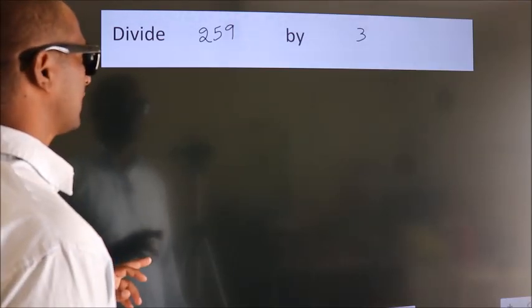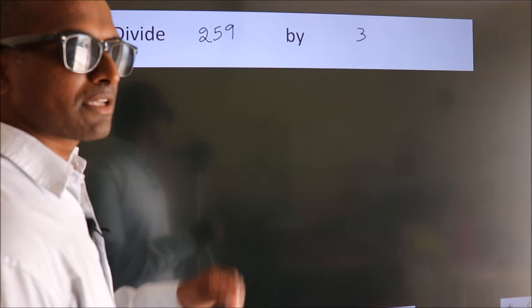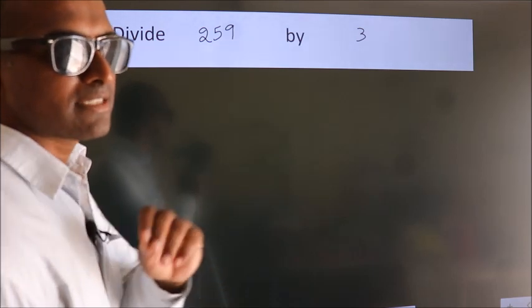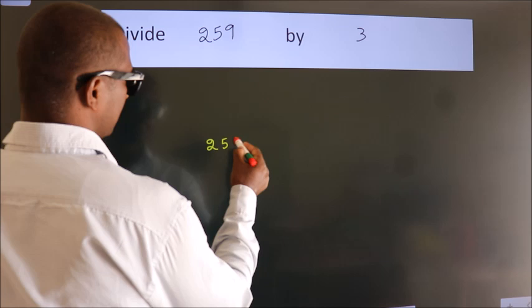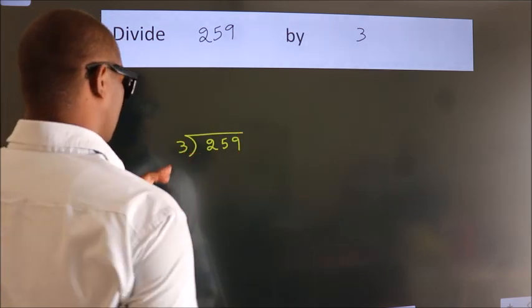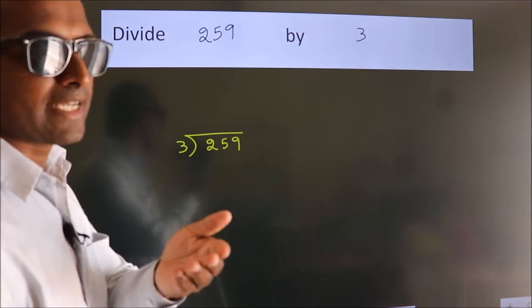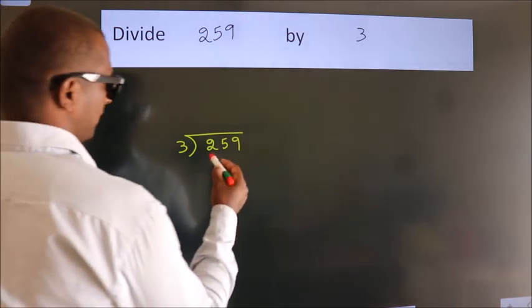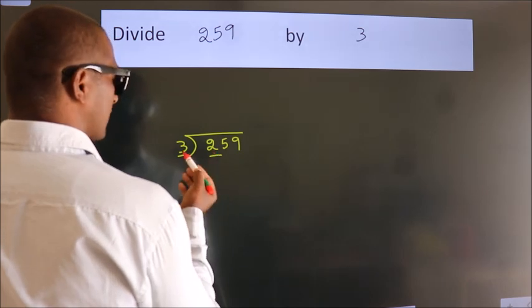Divide 259 by 3. To do this division, we should frame it in this way. 259 here, 3 here. This is your step 1. Next, here we have 2, here 3. 2 smaller than 3.